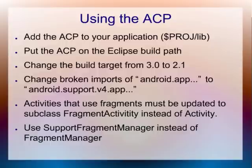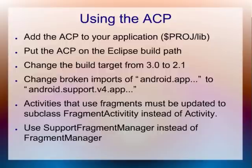Add the ACP to your application, put the ACP on the Eclipse build path, change the build target, then you're going to have to fix a bunch of stuff. As soon as you do that, you're going to see all sorts of red lines in Eclipse. First fix the broken imports — then update all the activities. Instead of subclassing Activity, they now need to subclass FragmentActivity. And they need to use the support fragment manager instead of the fragment manager. The reason for these changes is that if you didn't do this, when you tried to deploy the application on Honeycomb, there'd be name collisions between the ACP library and Honeycomb, which supplies classes called Fragment and FragmentManager. To avoid those name collisions, they had to rename those things.